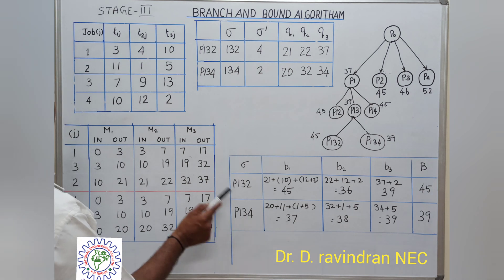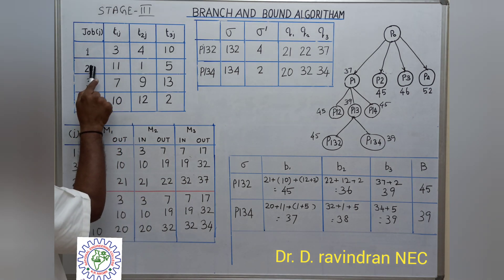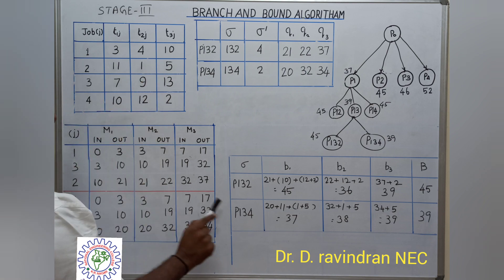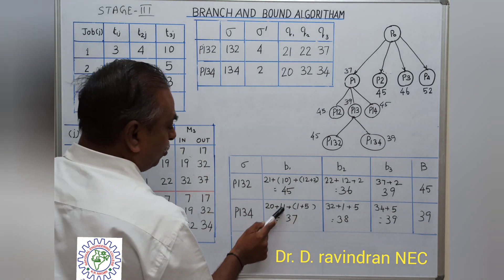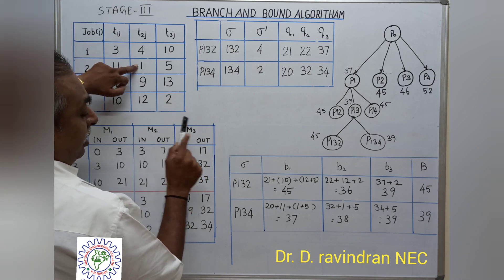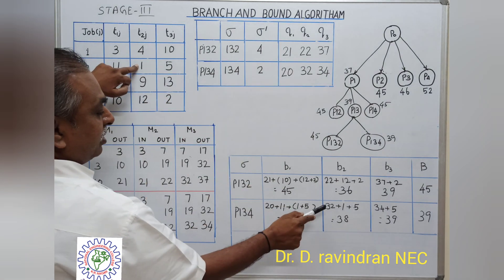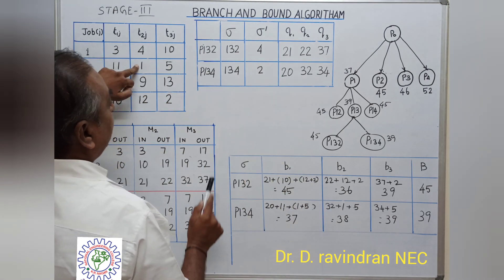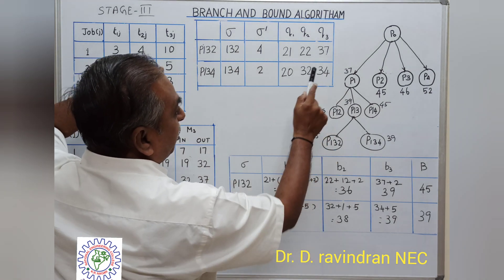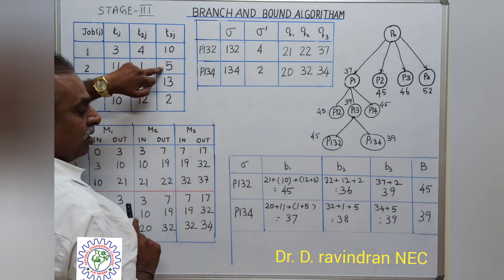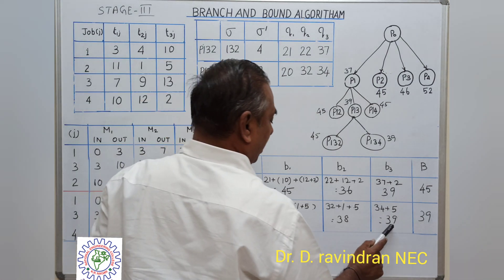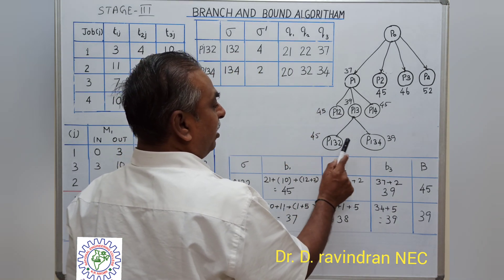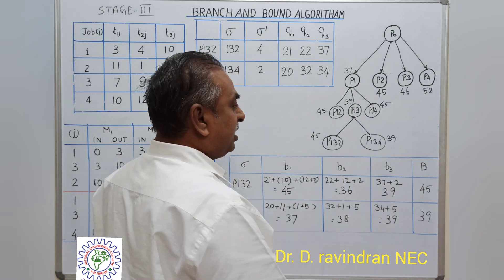For sequence 1→3→2 with remaining job 4: B1 = 21 + 10 + sum = 45. B2 = 22 + 12 + min(2) = 36. B3 = 37 + 2 = 39. Maximum B = 45. For sequence 1→3→4 with remaining job 2: B1 = 20 + 11+1+5 = 37. B2 = 32 + 1+5 = 38. B3 = 34 + 5 = 39. Maximum B = 39.